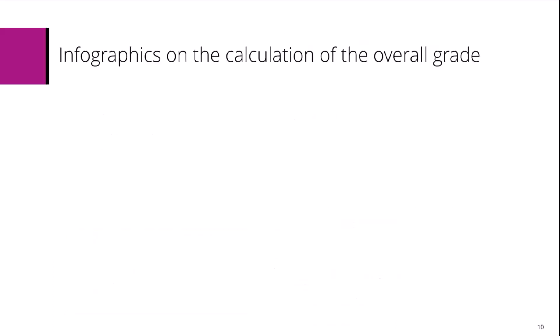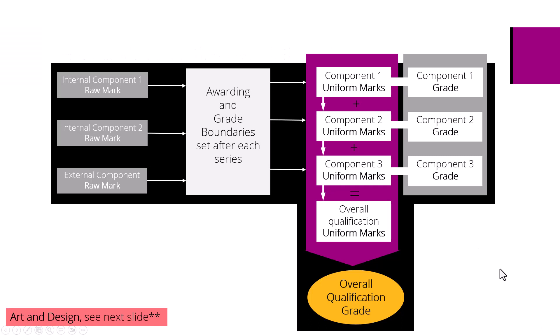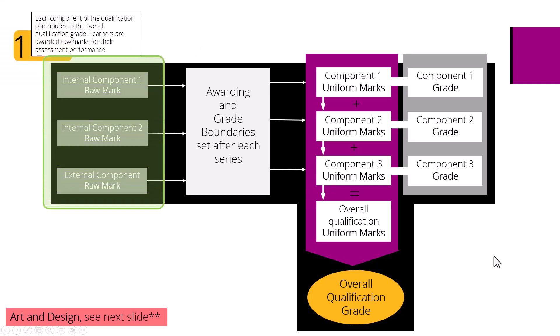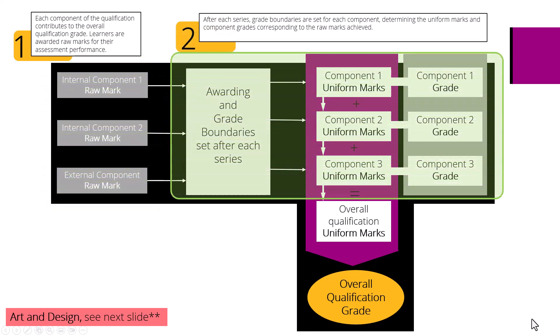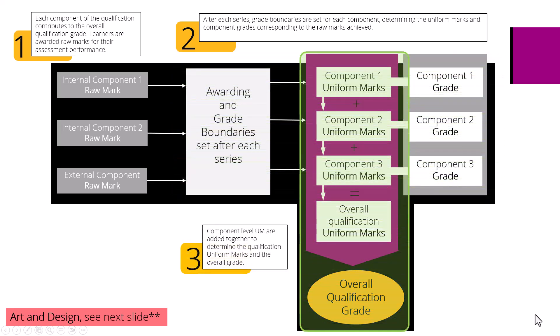Let's take a look at some infographics on how grading works and how the overall grade is calculated. Each component of the qualification contributes to the overall qualification grade. Learners are awarded raw marks for their assessment performance. After each series, grade boundaries are set for each component, determining the uniform marks and component grades corresponding to the raw marks achieved. Component level uniform marks are added together to determine the qualification level uniform marks and the grade it is equivalent to.